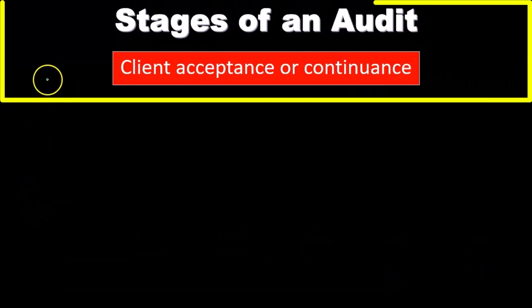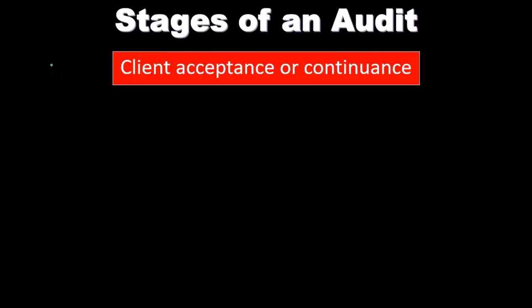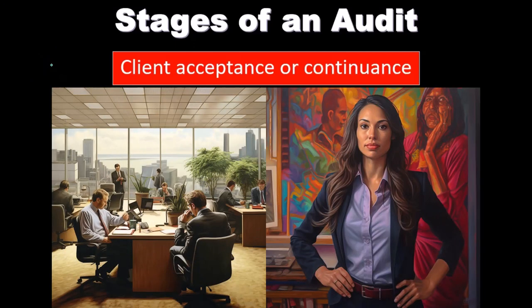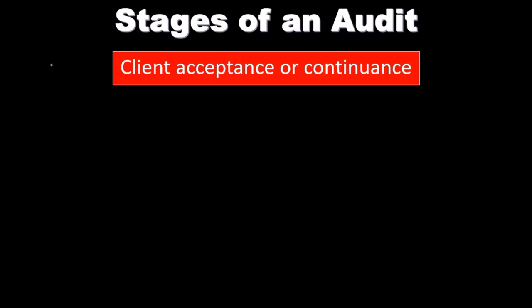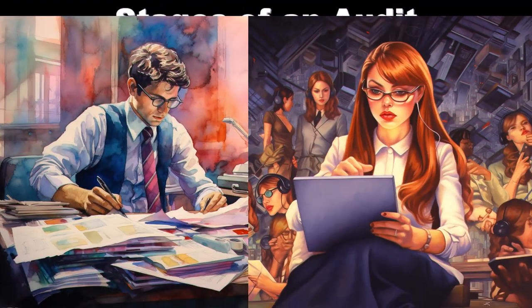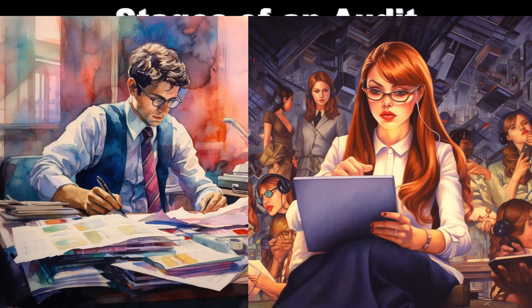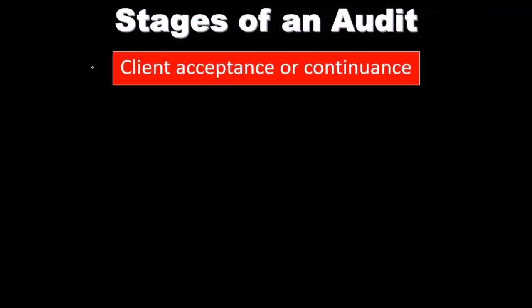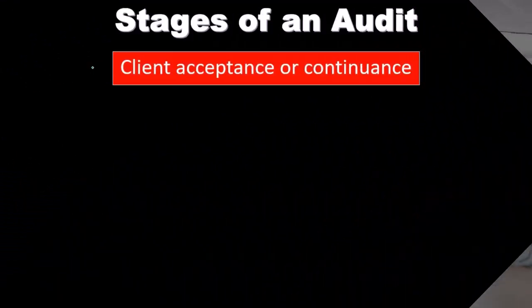The stages involved begin with client acceptance or continuance. Two types of things could happen: we have a completely new client, where we take on the new client process and accept the engagement — this is usually done by the partner — or, more commonly once we have an established relationship, we have continuing clients, clients that we have audited in the past. Especially for publicly traded clients, those need to be audited every year, so we may have a continuing type of process.